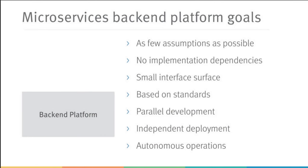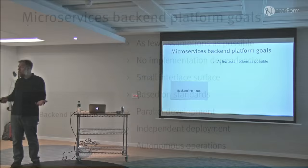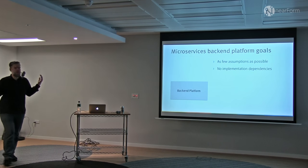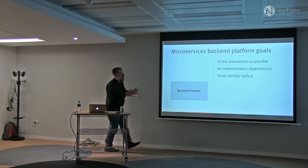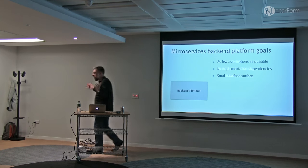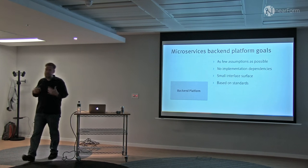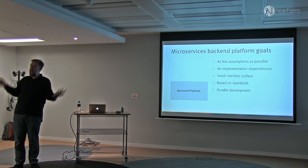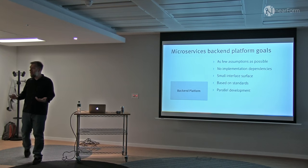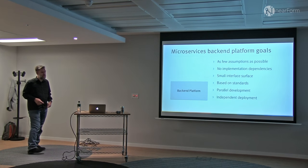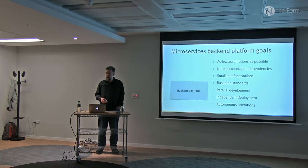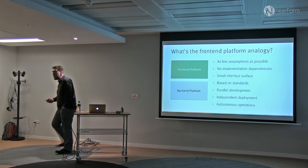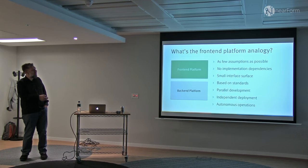If we look at the backend platform, we have a number of goals: make as few assumptions as possible, support different implementation technologies, no implementation dependencies, a small surface where every service only interacts through network protocols, based on standards as much as possible, parallel development so several teams can develop simultaneously, independent deployment, and autonomous operation. Those are the requirements for a backend platform. What's the front-end analogy — what do we do on the front-end side to achieve similar goals?